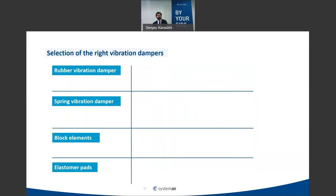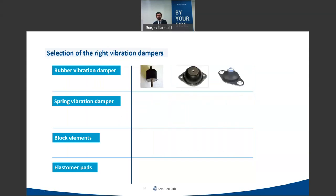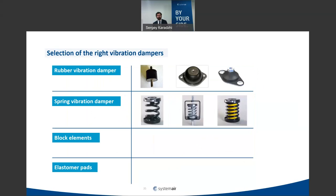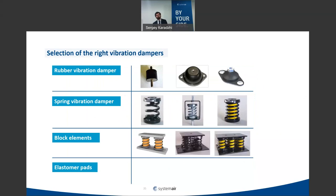Selection of the right vibration dampers will be discussed in detail in the next webinar. For now, the types are: rubber vibration dampers, spring vibration dampers, and block elements consisting of several spring dampers. These are used depending on the weight of the fan, its purpose, and other factors.